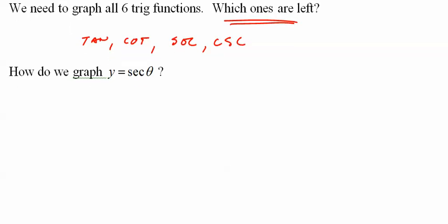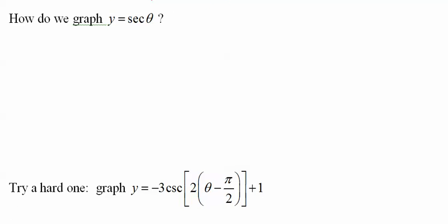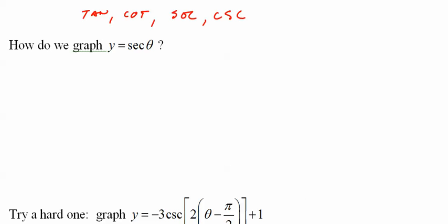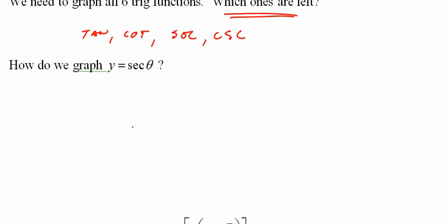Let's do secant. Well, as I am fond of saying, I can't do secant. However, I can do cosine. So let's do cosine. We have an amplitude of 1, a period of 2π, a vertical shift of 0, and a horizontal shift of 0.